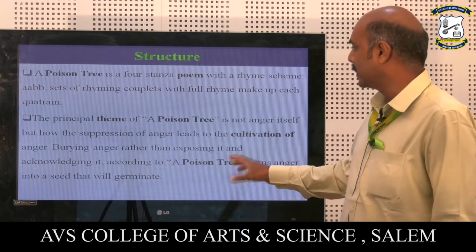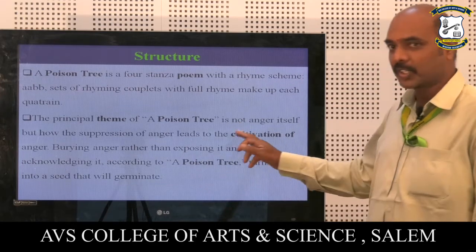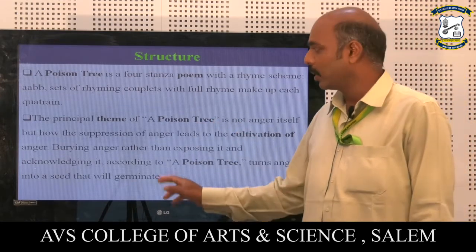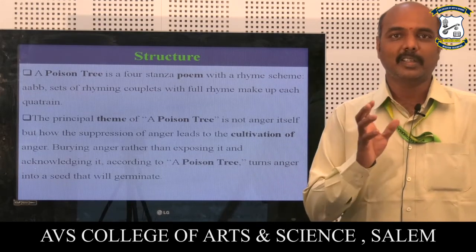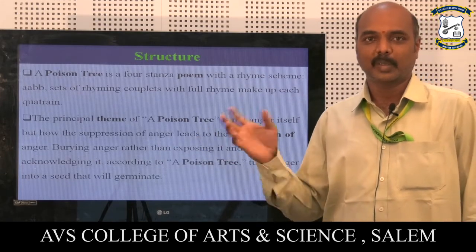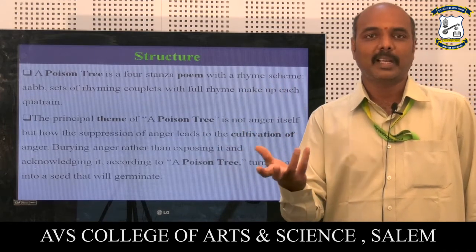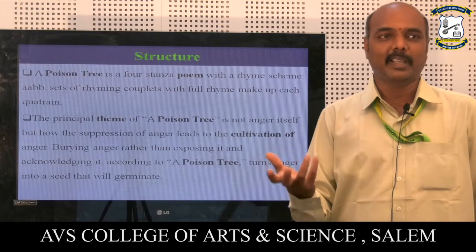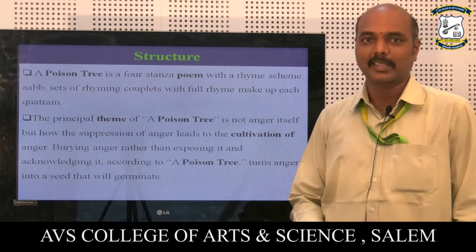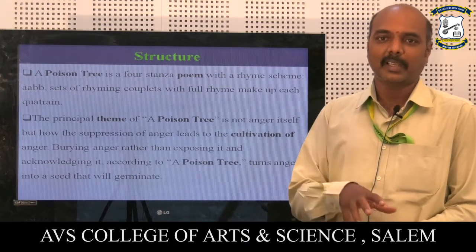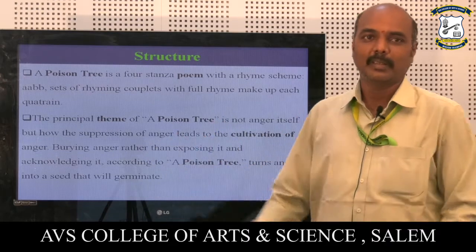The poem mainly deals with the suppression of anger, which leads to the cultivation of anger. The word cultivation is related to agriculture — cultivating plants or cereals. The poet is also trying to explain the suppression of anger by relating it to a garden or the growth of a plant.